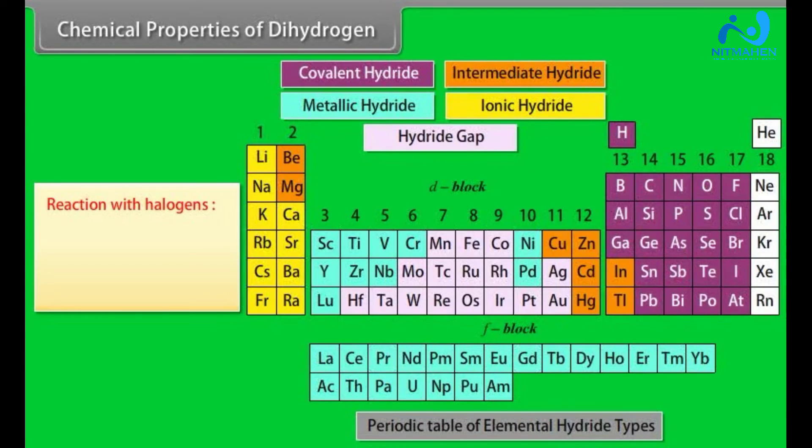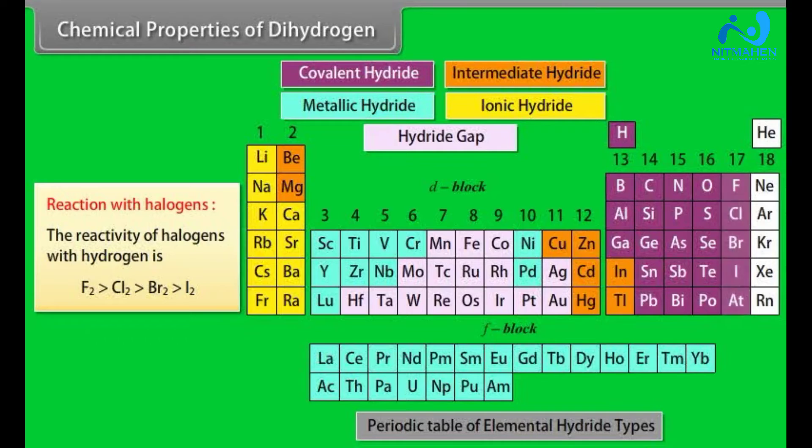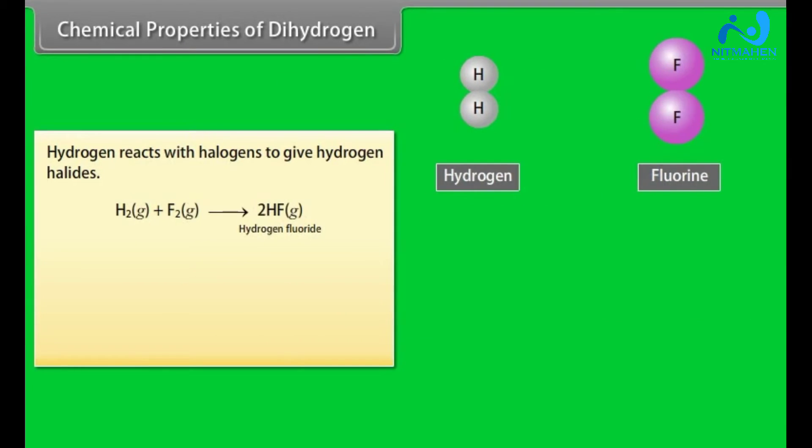Chemical properties of dihydrogen. Reaction with halogens: The reactivity of halogens with hydrogen is fluorine greater than chlorine, greater than bromine, greater than iodine. Hydrogen reacts with halogens to give hydrogen halides.